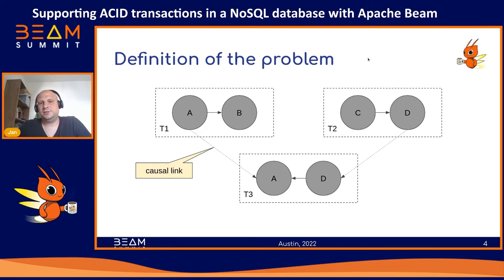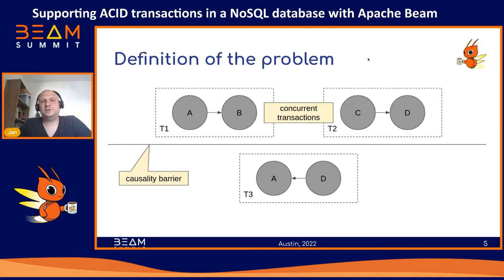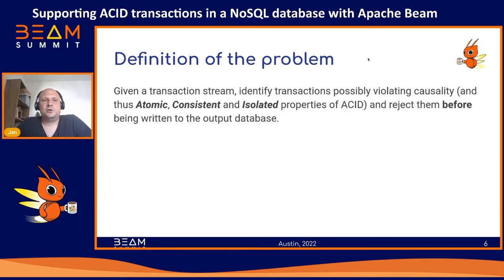So we must execute transaction T3 only after T1 and T2 complete. We can see that as a causality barrier that separates T3 from T1 and T2, while T1 and T2 are concurrent and can be executed in any order with the same outcome. Transaction T3 has to be executed only after T1 and T2 complete, their outputs are committed, and those outputs are read by T3.